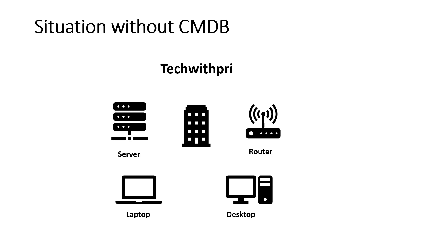The leadership or manager then asks: how many times has this server been affected previously? The IT team doesn't have that answer accurately, because they may be maintaining server details in an Excel file or SharePoint — not in a formal database. And if the client asks how many servers or applications are linked to that mail server and are already affected, the team can't answer.